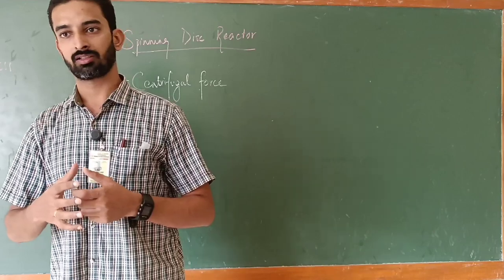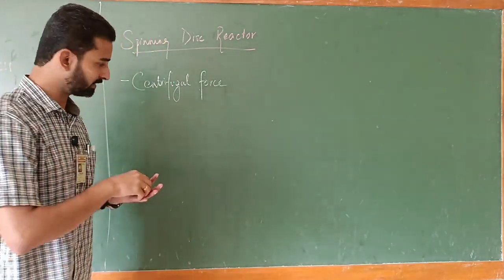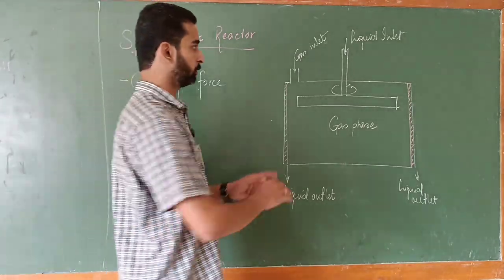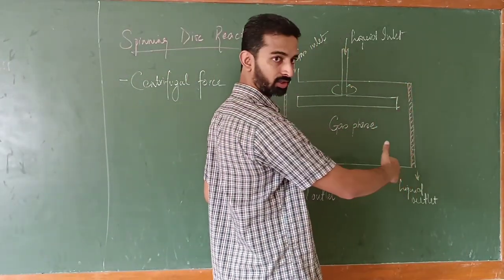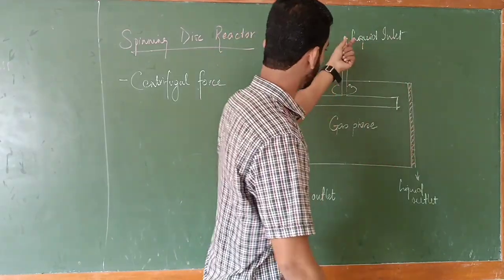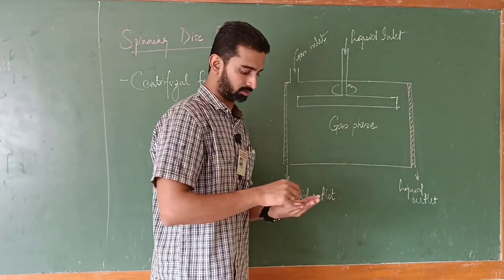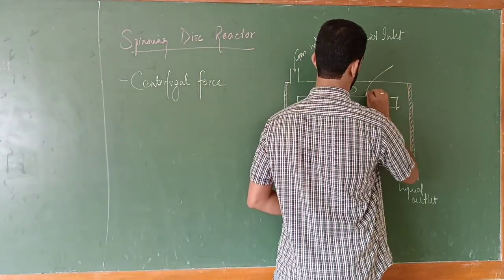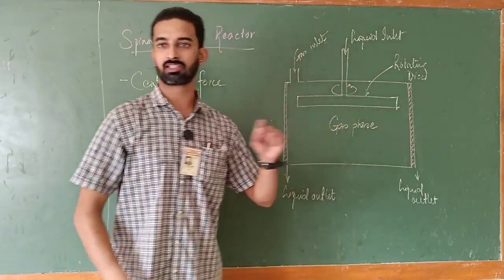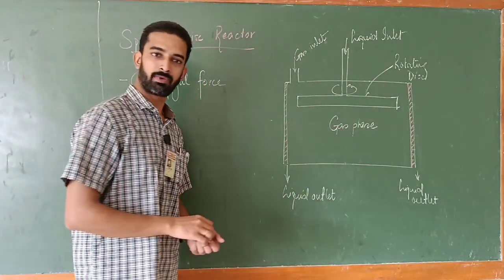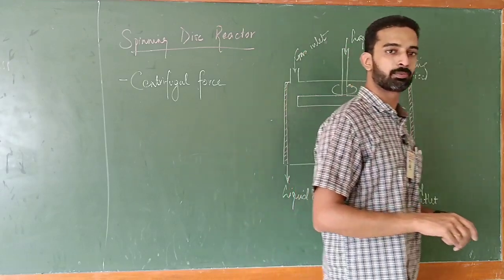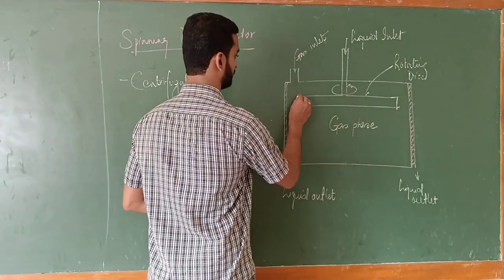I hope most of you know what is centrifugal force. Whenever any body is revolving it experiences an external or outward force which is given by mv square by r, away from the center. Based on this particular force, this particular action, this equipment or this reactor is designed. This particular reactor - this is a general schematic representation of a spinning disk reactor. This is a cylindrical structure. In that we are having the inlet for the liquid. This is the rotating disk.